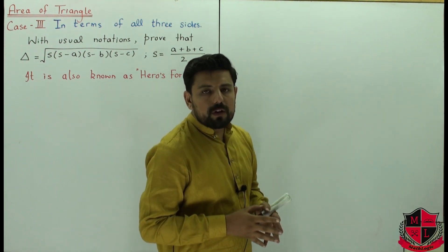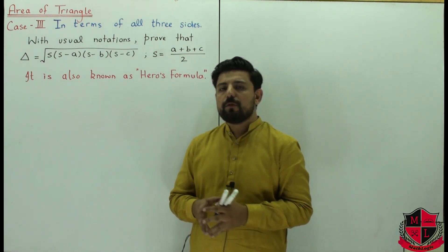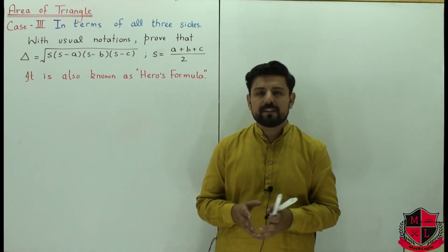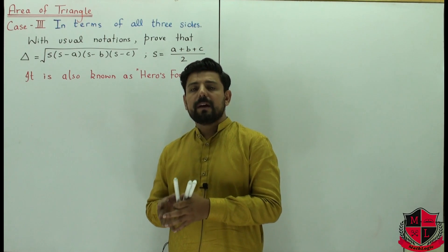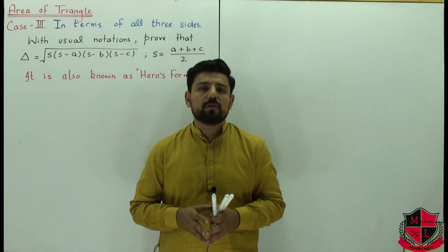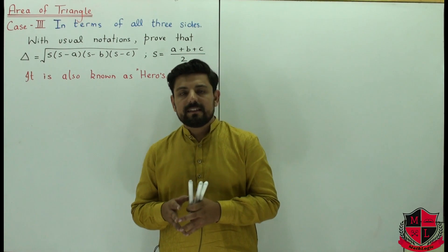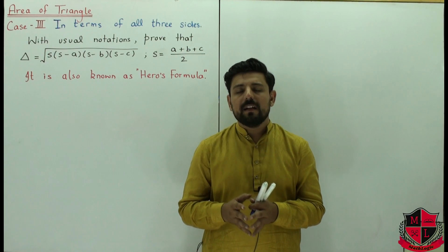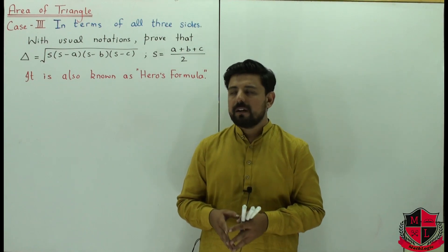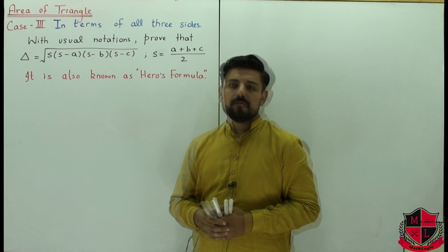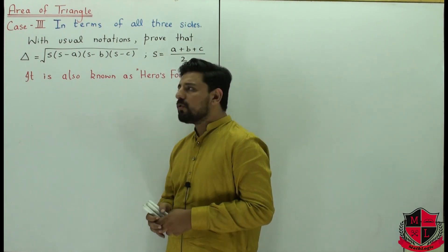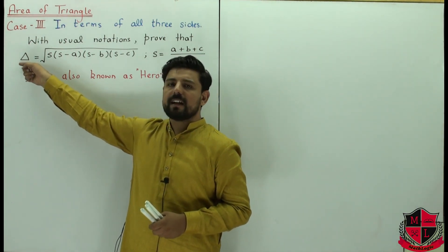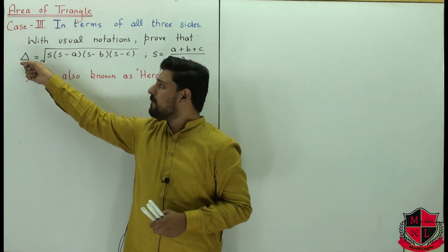In today's lecture we will talk about the third case for finding area of a triangle. We have observed two cases before: the first case was when we had two sides and the included angle given, the second case was when one side and two angles were given. Now the third case is when all three sides are given. In that case we use the formula for area of triangle, which we simply denote as A or delta.